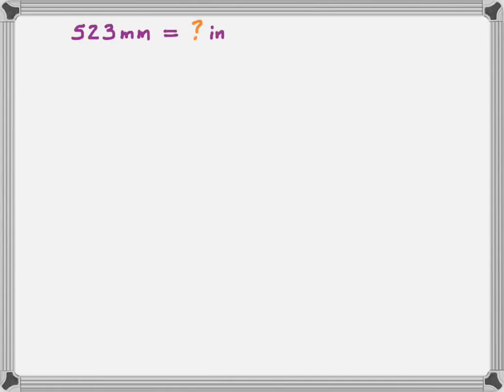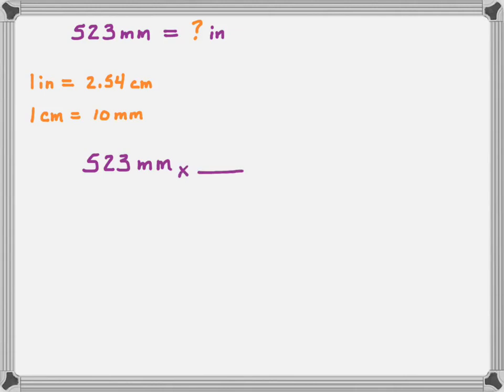Let's try another example. I have 523 millimeters and I want to know how many inches this is. Looking in the back of the book, it only tells me that 1 inch is equal to 2.54 centimeters, but I'm starting with millimeters. I know that 1 centimeter is equal to 10 millimeters — this is because going down one step moves the decimal place over by 1, giving a factor of 10. So first I want to go from millimeters to centimeters, putting millimeters on the bottom so they cancel with the 523, and centimeters on top.